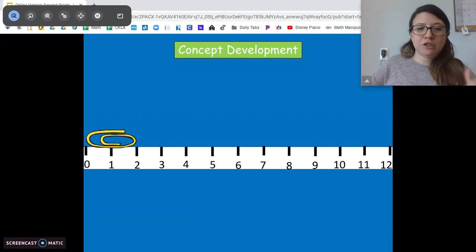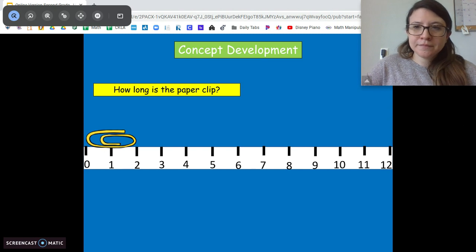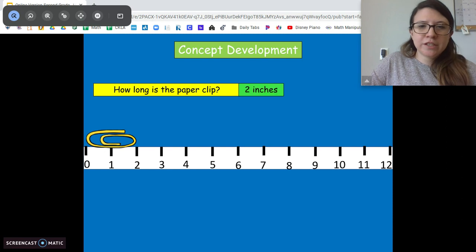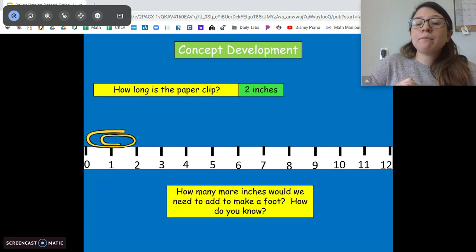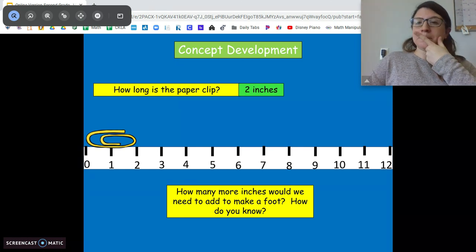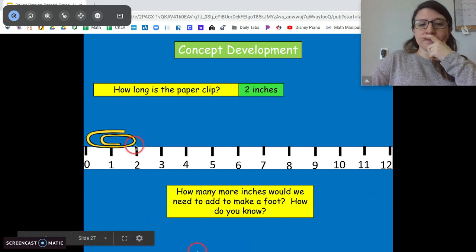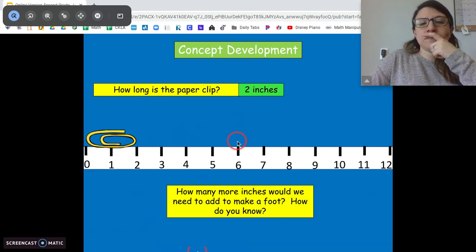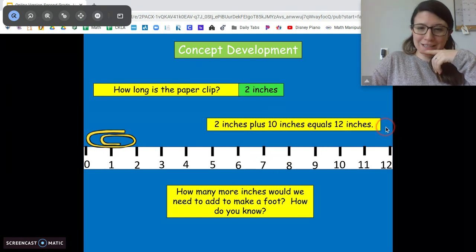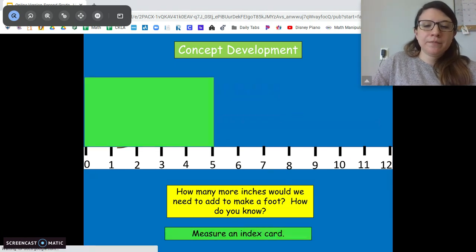All right. So let's measure some different objects and make sure we know how to use our rulers. How long is this paper clip? Make sure you include your units. Good. Two inches. Awesome. How many more inches would we need to add to make a foot? Remember our foot is 12 inches. Good. About 10 inches. Two inches plus 10 inches equals 12 inches. And that will give us a foot.